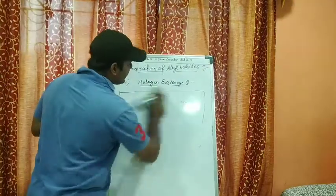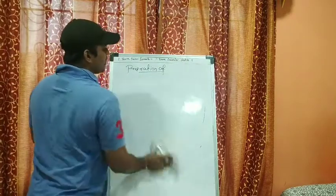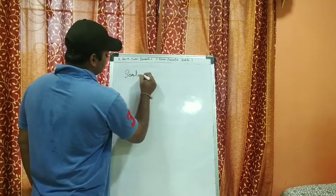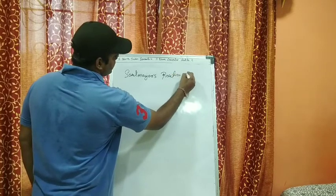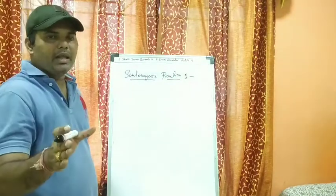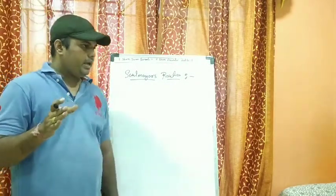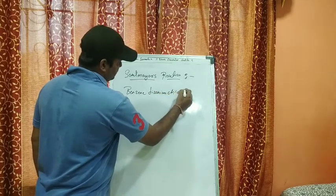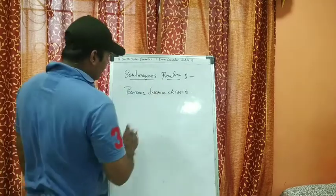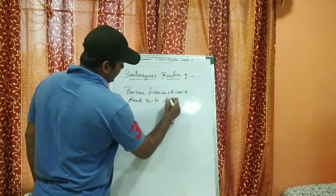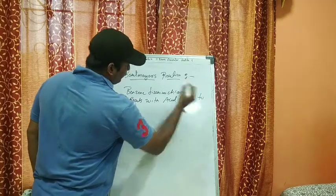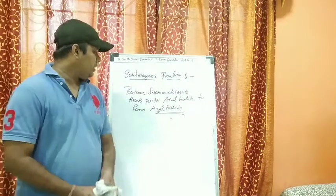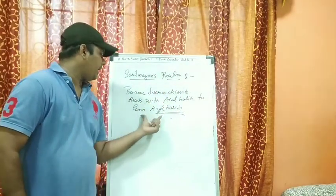This completes the preparation of alkyl halides. Now let's talk about the preparation of aryl halides. In the preparation of aryl halides, we are going to see the Sandmeyer's reaction. In Sandmeyer's reaction, benzenediazonium chloride reacts with an acid halide in the presence of a copper halide to form an aryl halide.